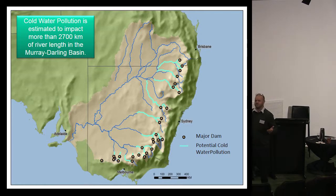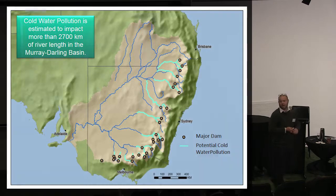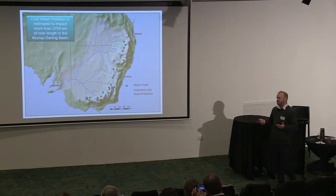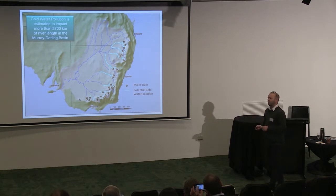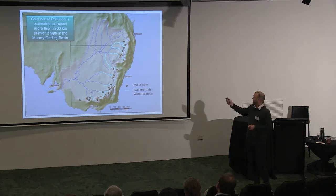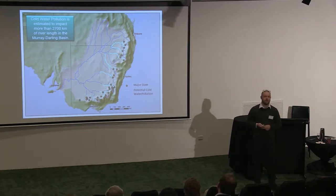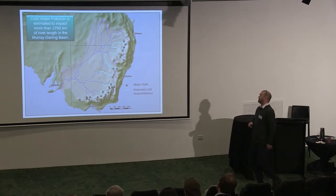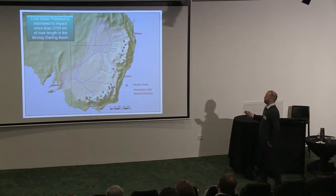I'm not going to talk about the extent of cold water pollution. You've seen variations of this map over the last 24 hours. Our estimates are that roughly 2,700 kilometres of river in the basin are affected by cold water pollution to some degree, and you can see those large contributing storages range from Queensland right down to Victoria.